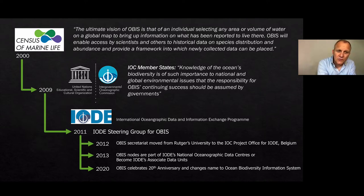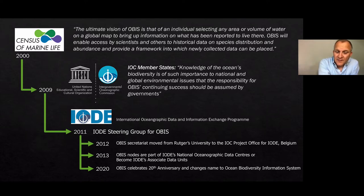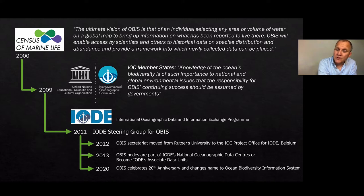The OBIS nodes are either part of the IODE's National Oceanographic Data Centers, and if they are not part of the NODCs, they became an IODE associate data unit. This year we are celebrating our 20th anniversary, and importantly we also changed our name. We were the Ocean Biogeographic Information System before, and now we are called the Ocean Biodiversity Information System.